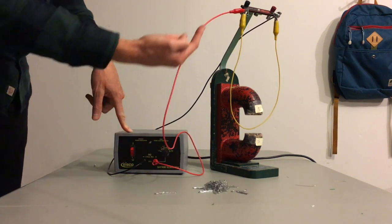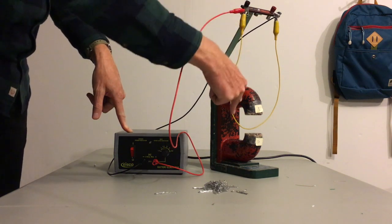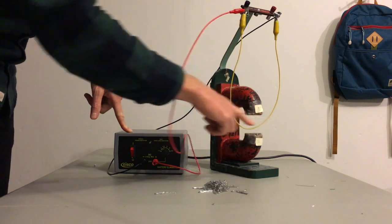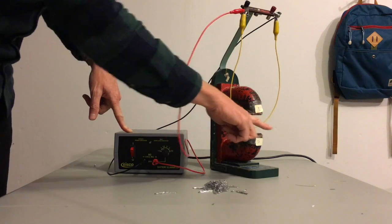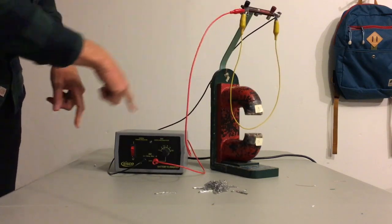So current is going to go up the red wire, down the yellow, to the right across this strong magnetic field, up the wire, and then back to the power supply.